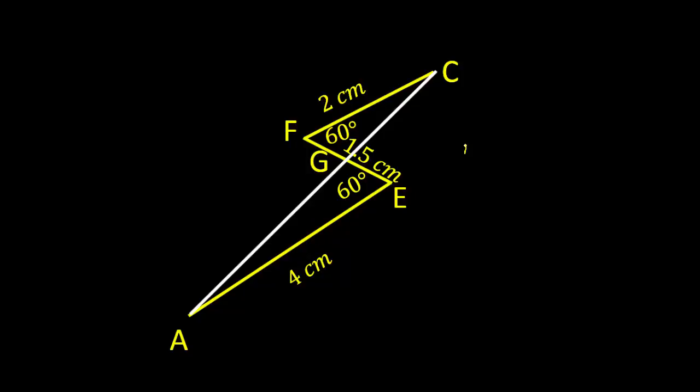So we can say in triangle AE upon FC, base to base should equal GE upon FG, and this value is 4 by 2. So this side ratio should be 2 to 1. If GE is 2x, this should be x. So we can say FE is 3x which is given 1.5.